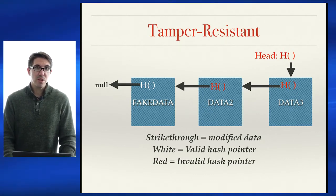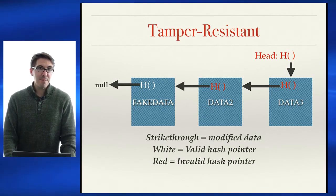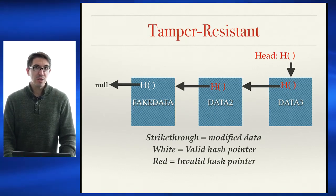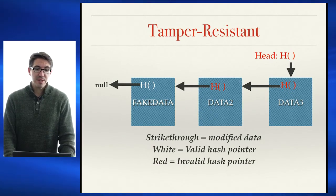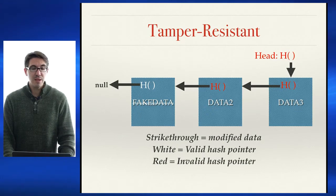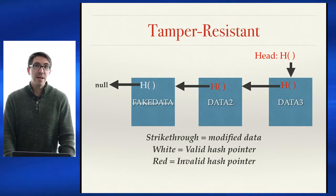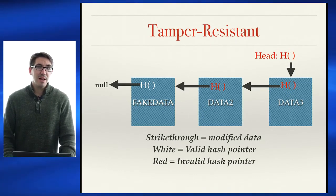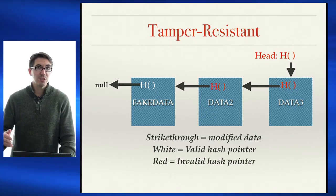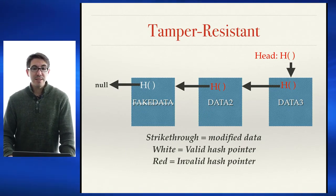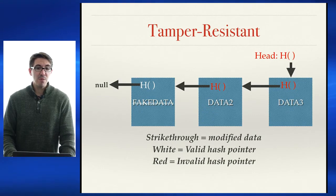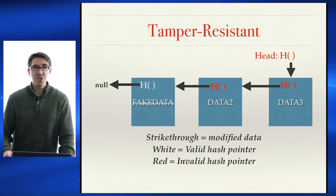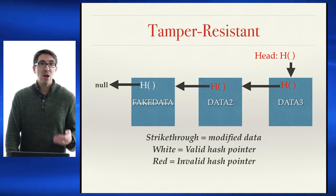What's going to happen? In the second node, the hash pointer is no longer going to be valid — the result it gives for fake data will be different than for data 1. Since that hash will be different, the hash for the third node will also be different, because it takes the hash of all data including the previous hash and data 2. This propagates all the way up. It becomes very easy to tell if any data in the blockchain was modified, because invalid hashes propagate all the way to the head. So to check if a blockchain has been modified, we just check whether our head pointer hash equals what we expect — we don't have to check every single hash.